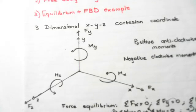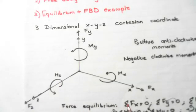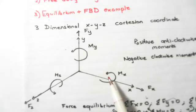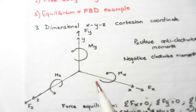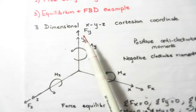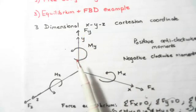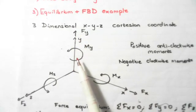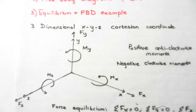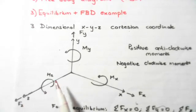In equilibrium, the main quantities we deal with are moments and forces. The x-axis has a moment about the x-axis and a force about the x-axis. The y-axis has a force and a moment about the y-axis. And finally, the z-axis has a force and a moment about the z-axis.